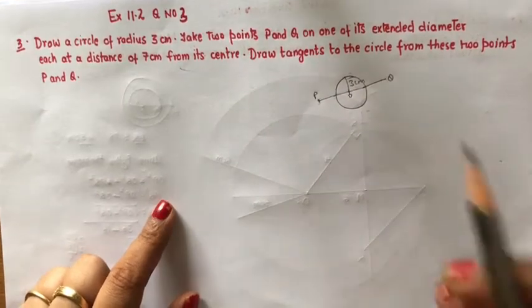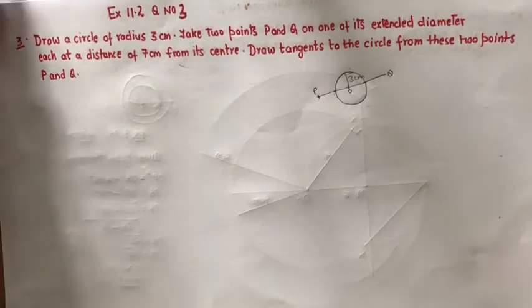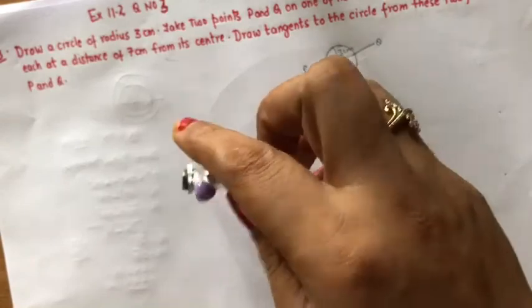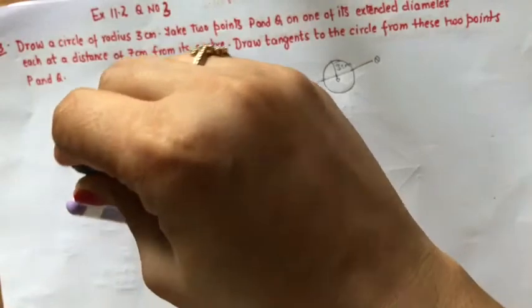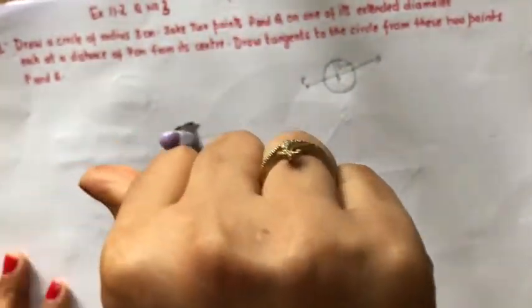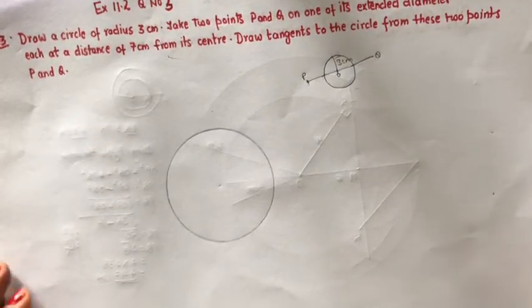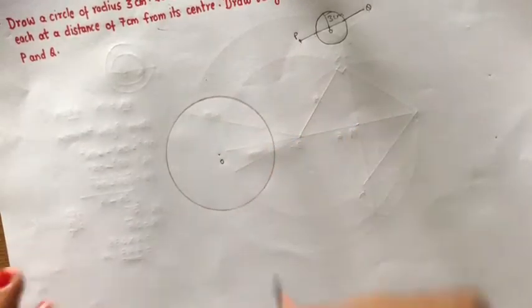So we shall proceed by making a circle of radius 3 cm. So first step, make a circle of radius 3 cm. So what we have done here? We have made a circle of radius 3 cm, right?